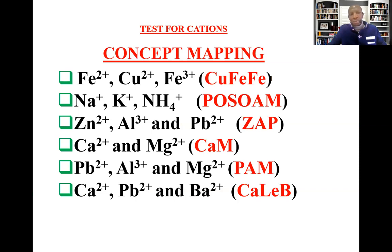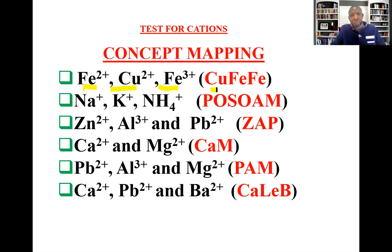We have the COVFEFE group — that is iron(II), copper(II), and iron(III). COVFEFE stands for copper and the two irons — iron(II) and iron(III). These are the colored ions; that's why they are grouped together.